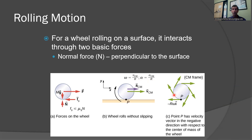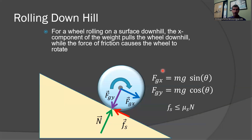When looking at every point on the wheel's surface, if we take the center of mass as stationary, every point is moving in the opposite direction. If we take a point on the surface to be stationary, then it is the wheel which is actually in motion.